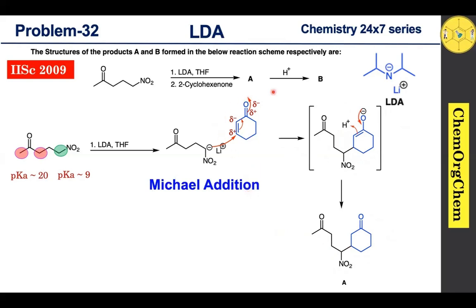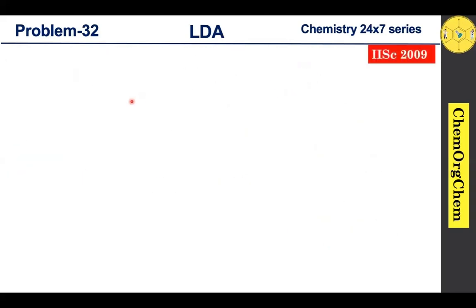The next step involves reaction with acid. Looking at this substrate in the presence of acid, it can undergo aldol condensation since there are two carbonyl groups along with active methylene groups. However, there is a problem: this substrate has four active sites — active methyl here, active methylene here, here, and here. When treated with acid, the question is which site will first form the enol and then undergo condensation with a nearby carbonyl carbon.